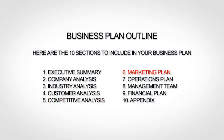The sixth section is your marketing plan, where you lay out your marketing strategy. The seventh section is your operations plan, where you explain how you actually run or will run your business. The next section, the management team, is where you provide bios of your team. The ninth section is your financial plan, where you give financial forecasts. And finally, the tenth and last section is your appendix, where you provide any additional supporting information.